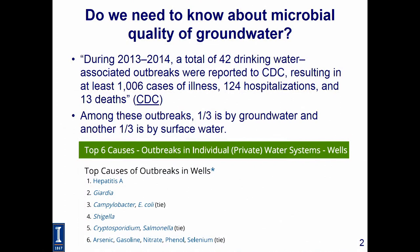Why do we need to know about microbial quality of groundwater? Based on recent research, the most recent available data from CDC showed that in 2013 and 2014, there were a total of 42 drinking water-associated outbreaks reported to CDC. That is not small — it involved more than a thousand illnesses, 124 people who had to go to the hospital, and even 13 deaths. A third of that is related to groundwater, another third to surface water, and the remaining third to premise plumbing and drinking water distribution systems — distributed quite equally.